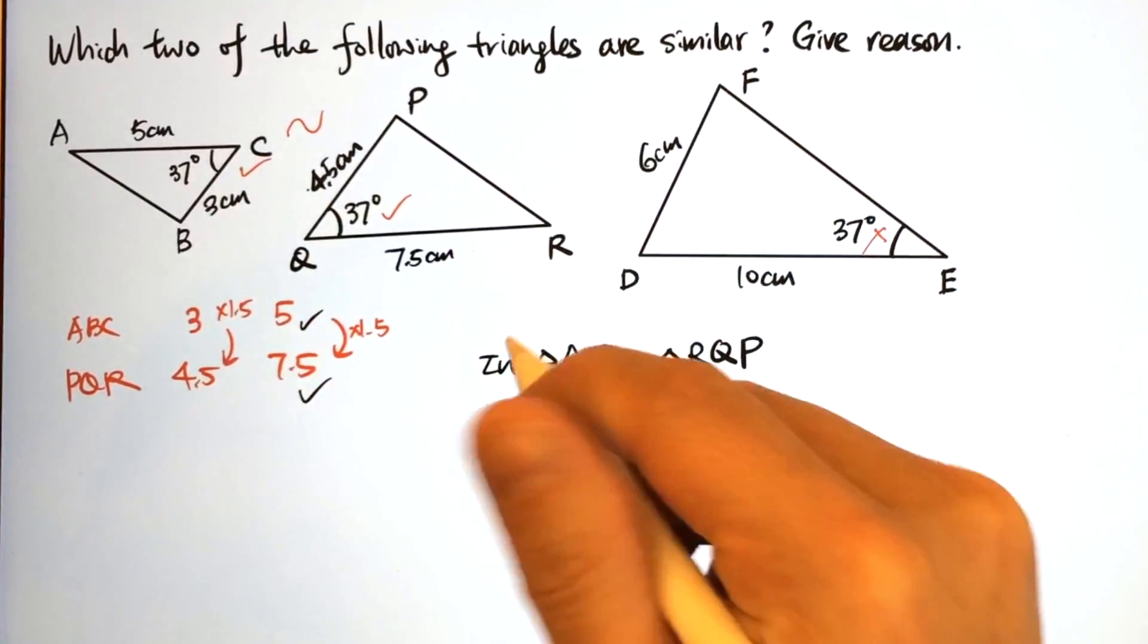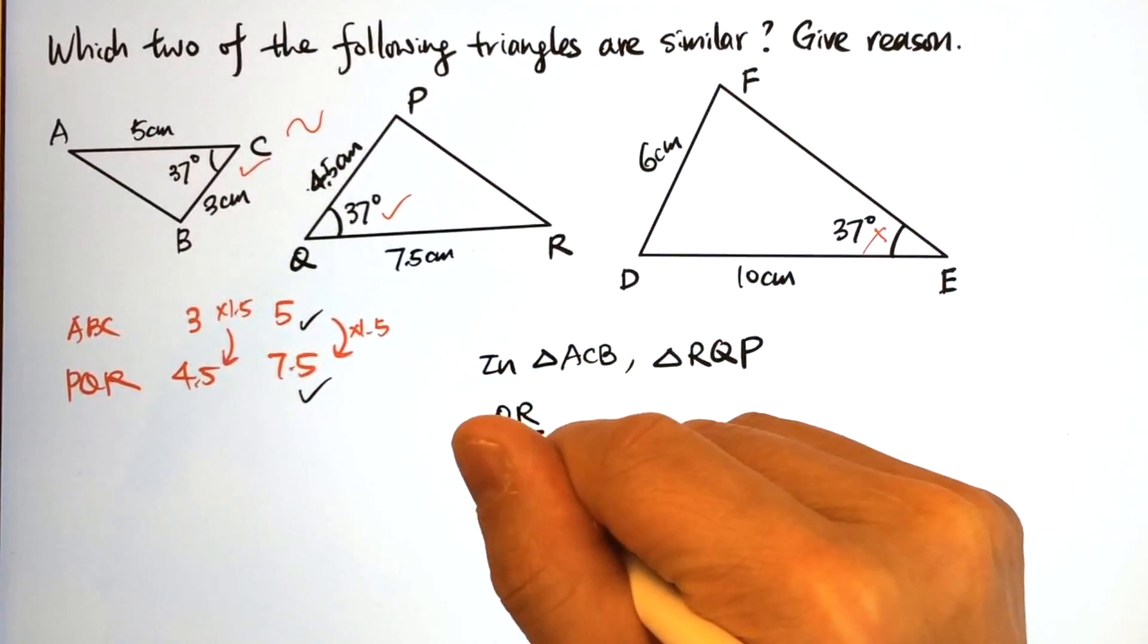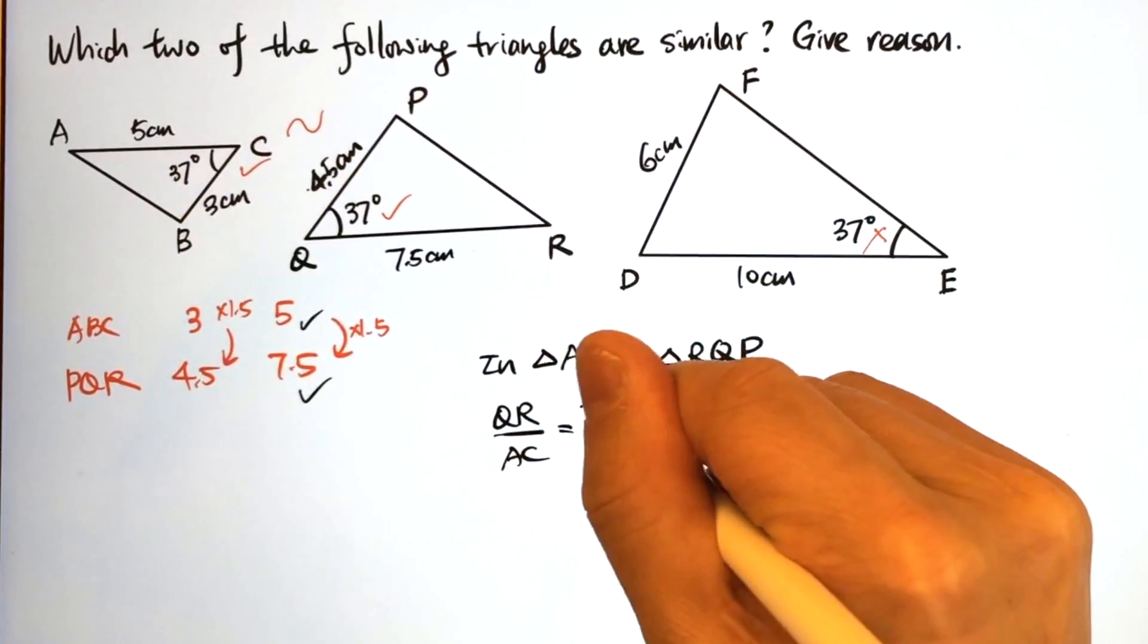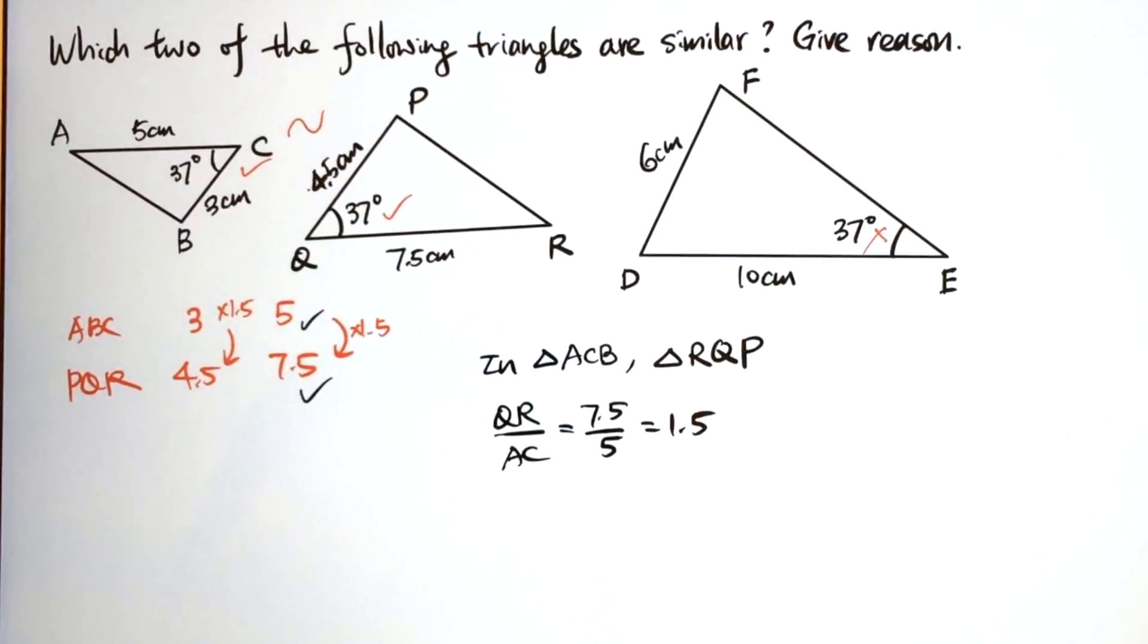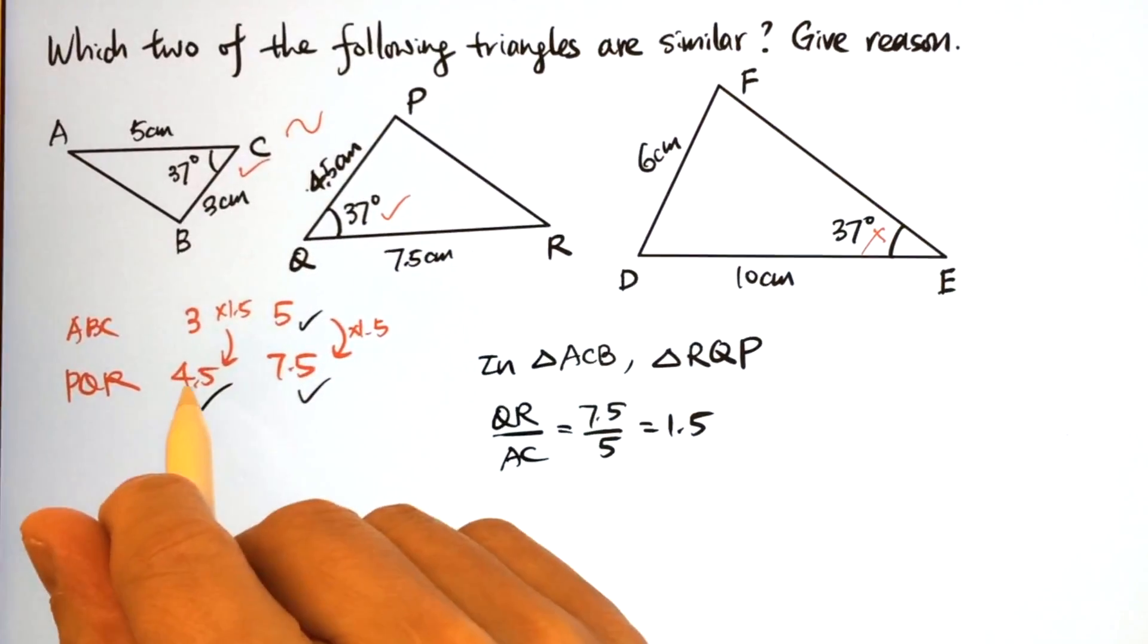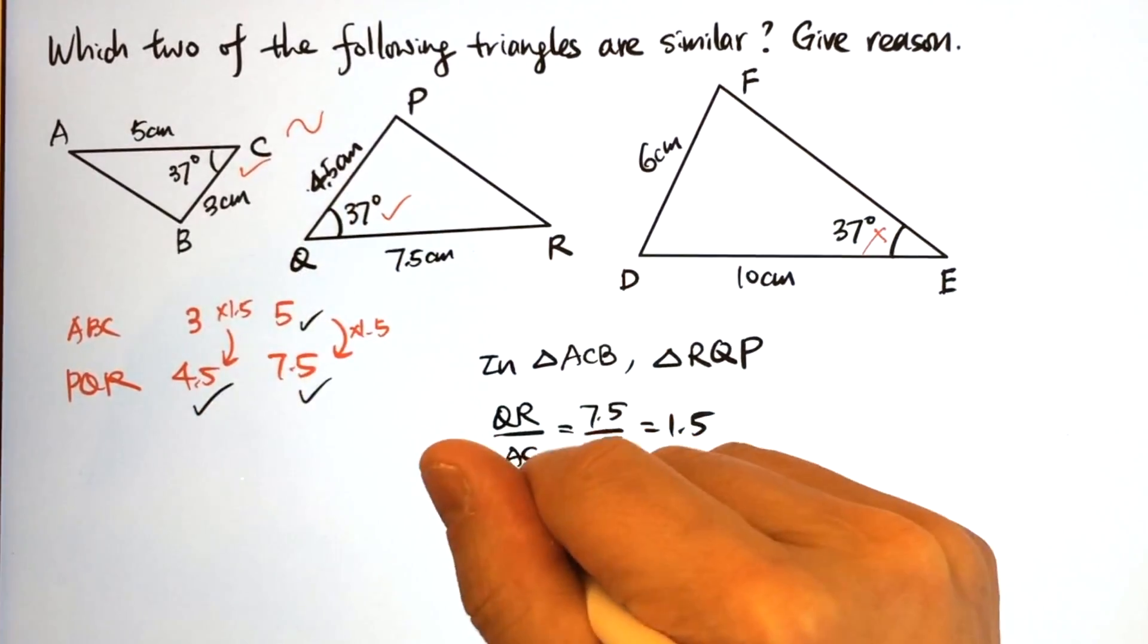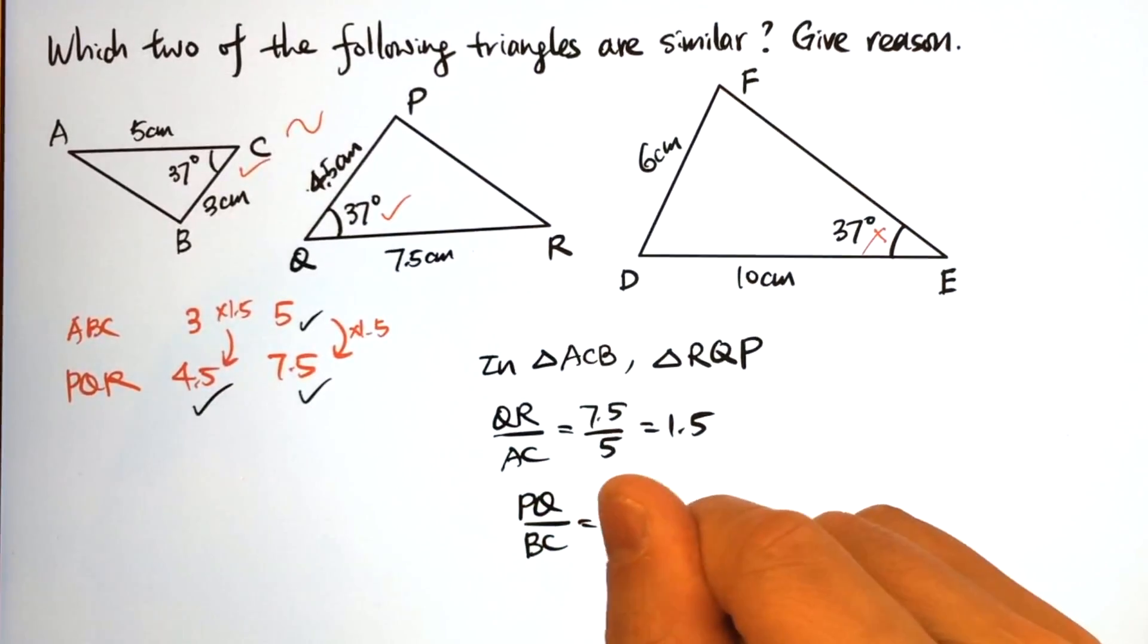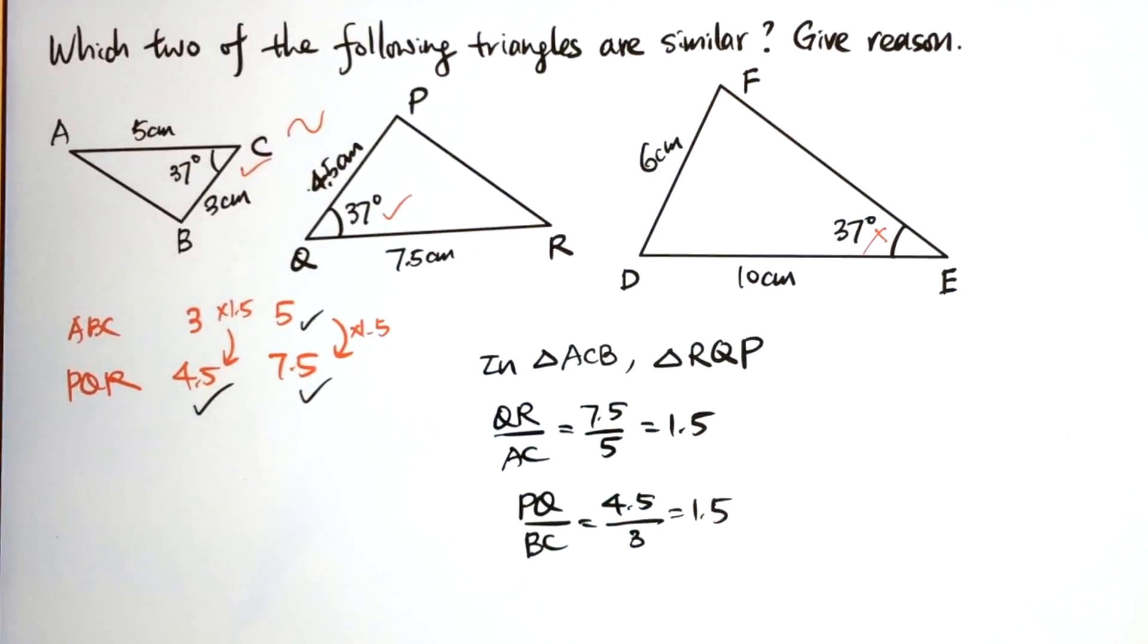QR over AC equals 7.5 over 5, and the ratio is 1.5. The second ratio: PQ over BC equals 4.5 over 3. Again, 1.5.